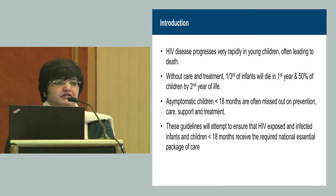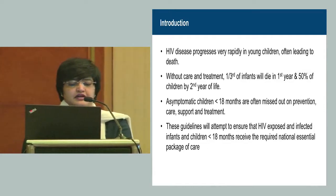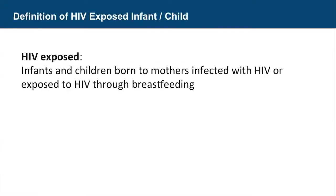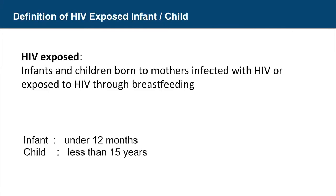Diagnosis before 18 months becomes a priority. We cannot do an antibody test for a baby who is less than 18 months, and hence PCR test was introduced. The EID program was launched to ensure that HIV exposed and infected infants and children receive the required national essential package of care. An HIV exposed child means a child who is exposed to the HIV virus either during pregnancy, during delivery, or during breastfeeding. We give service to infants less than 12 months as well as to children, as this is a longitudinal follow-up until 18 months when the final antibody test result is given by the ICTC.